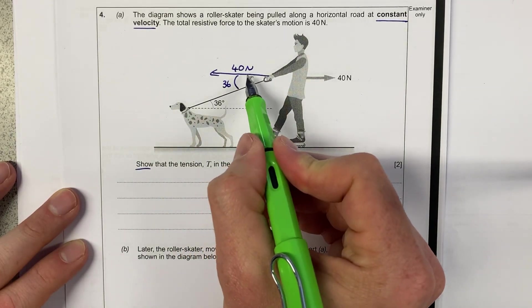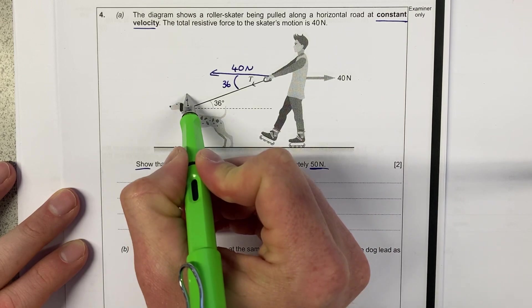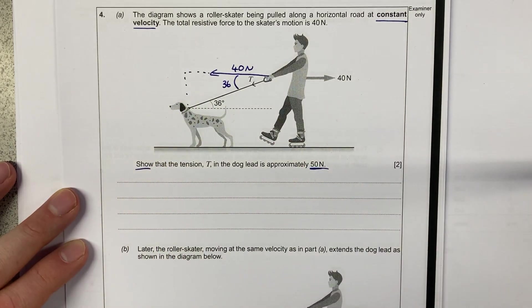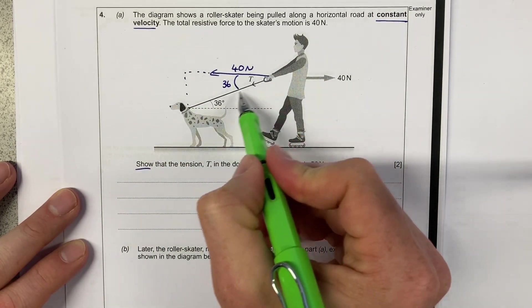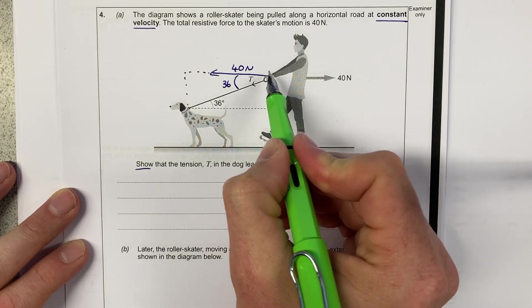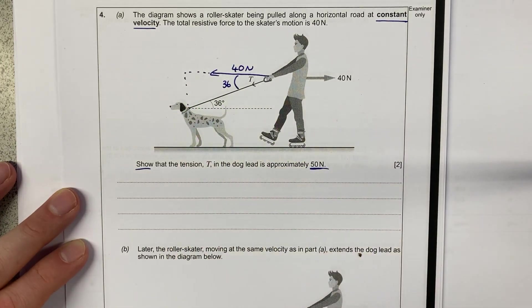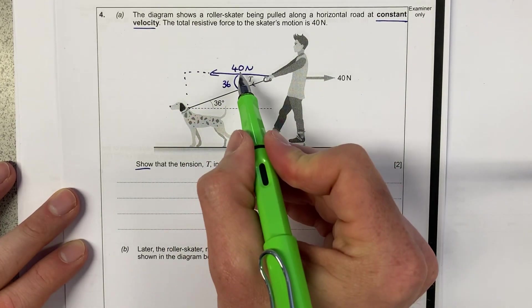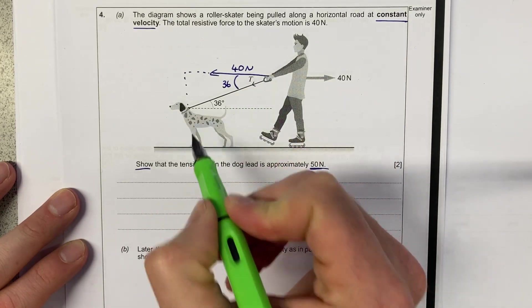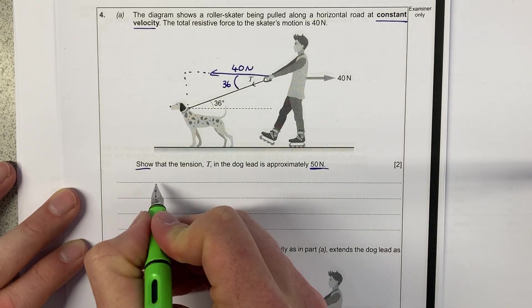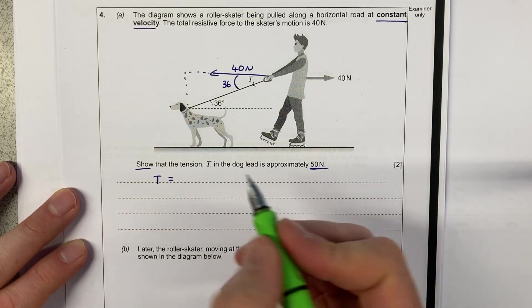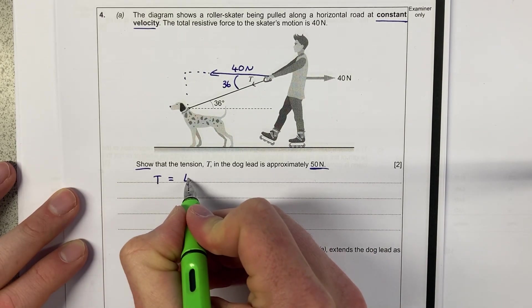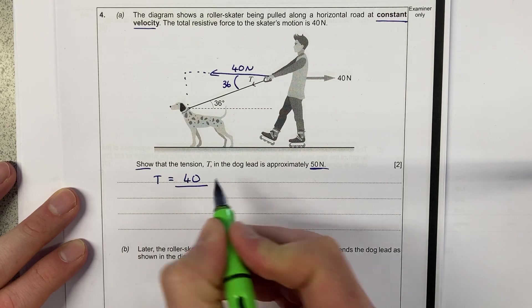So I'm just going to use my trigonometry skills to work out what the hypotenuse of this triangle is, as that will be the tension force with that as my adjacent force there. So because that's an adjacent, this is a hypotenuse, we're going to be using cos.